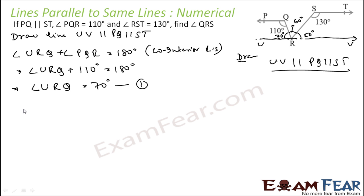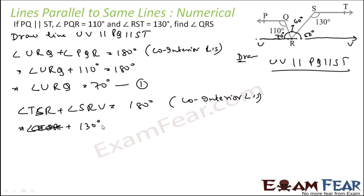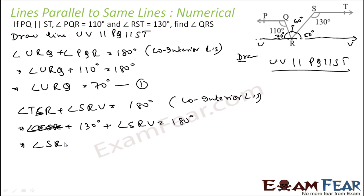Similarly, angle TSR plus angle SRV is equal to 180° — again, co-interior angles. Angle TSR is 130° (given), so angle SRV equals 180° minus 130°, which equals 50° — equation 2.